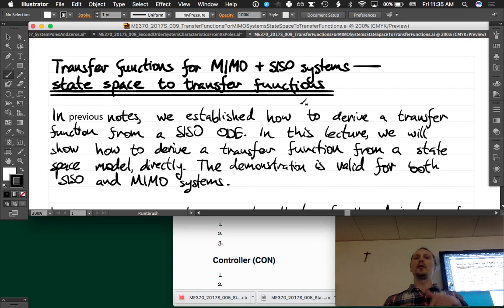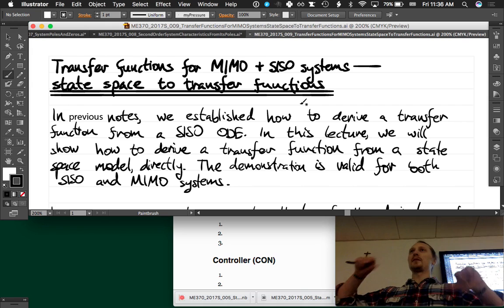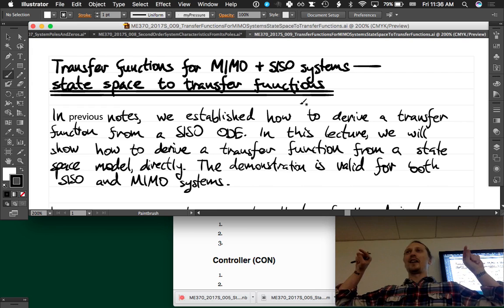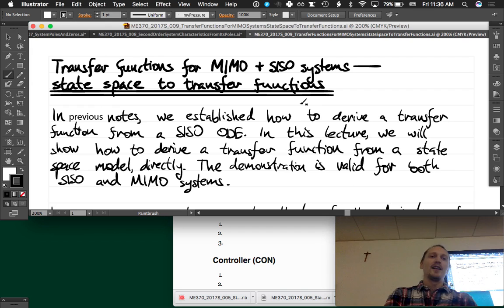State space to transfer functions. We learned about transfer functions for single input single output systems that you could represent as an input output ODE. We learned that it was straightforward, we had poles, we had zeros, they have meaning, etc.